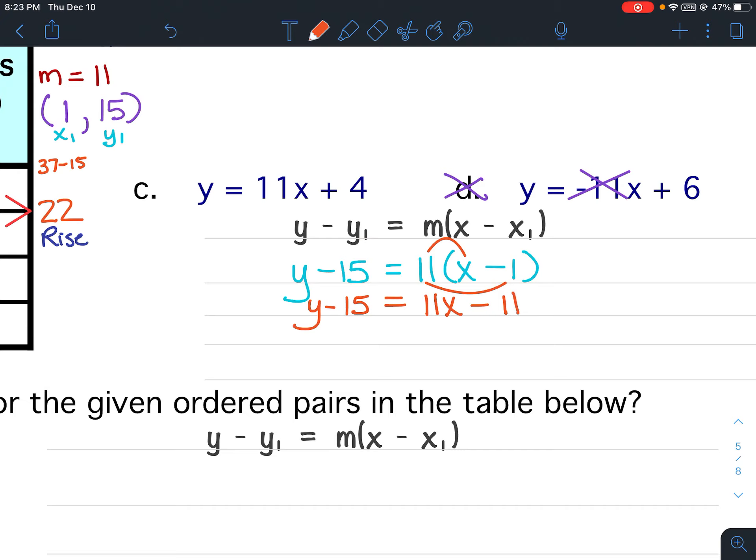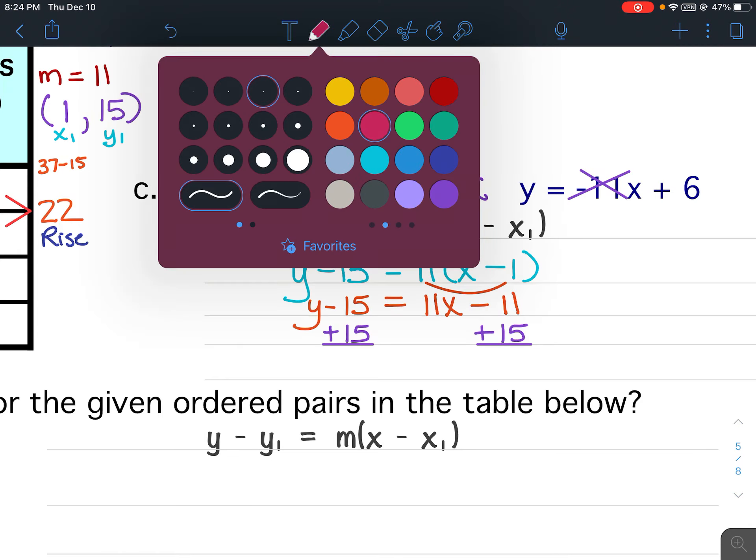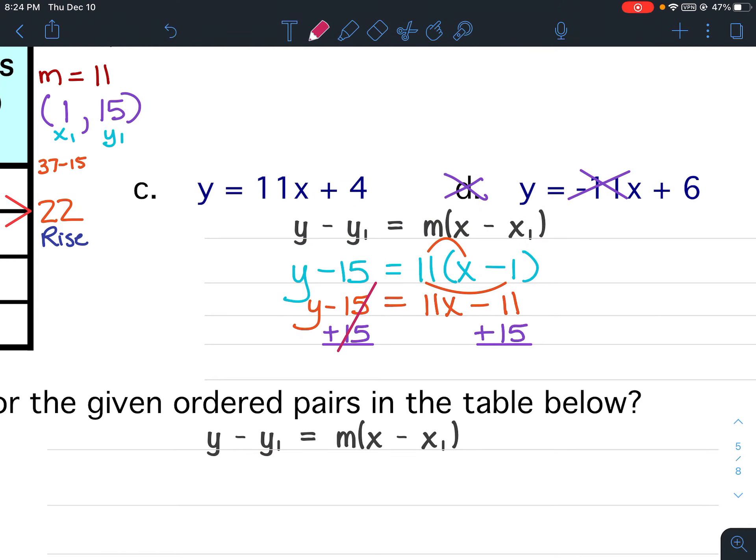And once you've done the distributive property, the next step is to isolate the variable y. I want to get y by itself. Well, what's with the y? A negative 15. The opposite of negative 15 is positive 15. So I'm going to add 15 to both sides. Cancel out those.